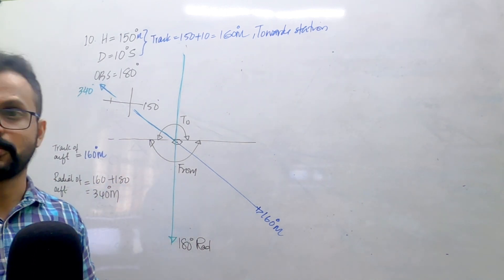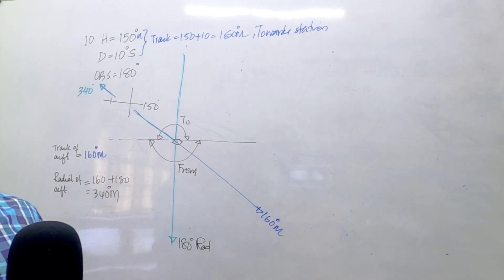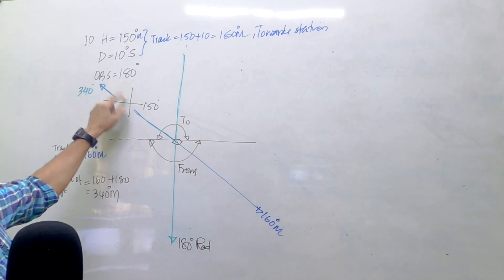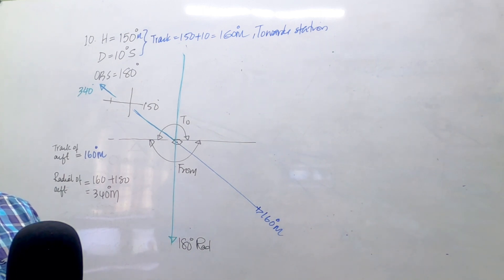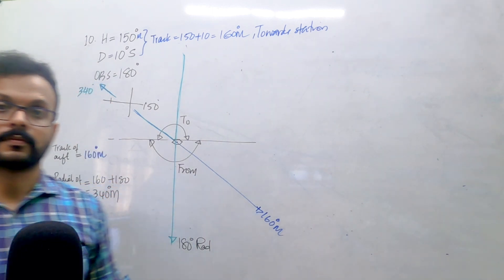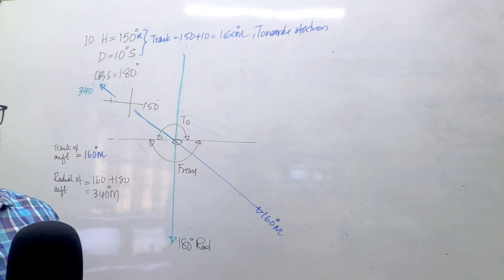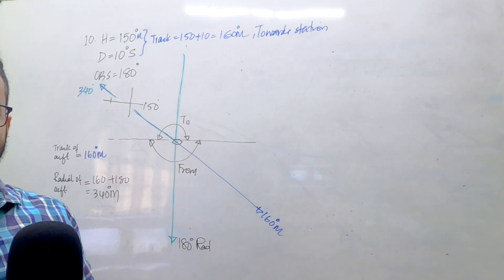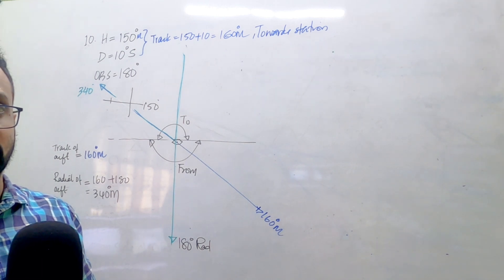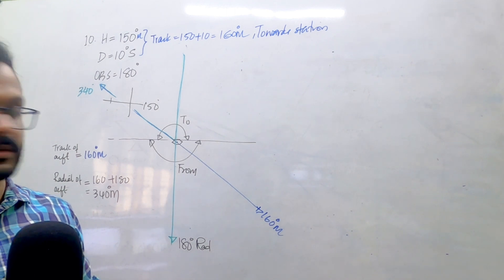What would the radial be if the aircraft were moving from the station, on a heading of 150 and a track of 160, but away from the station? The desired radial is 180 and the track is 160. When moving away from the station, the track and the radial are the same - the radial would be 160.